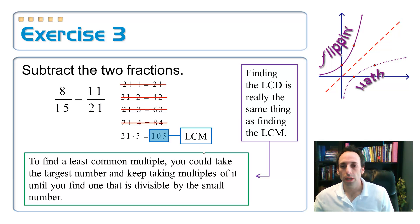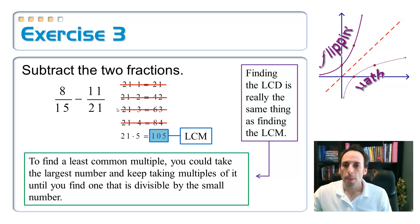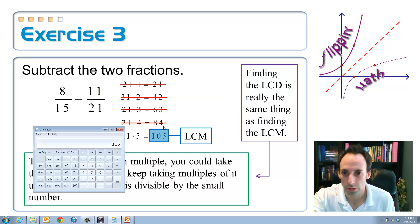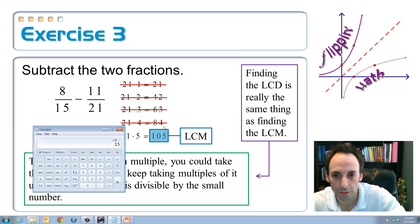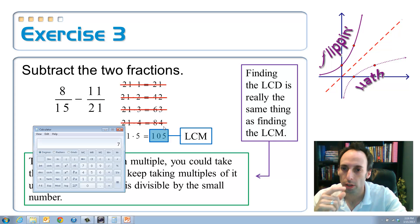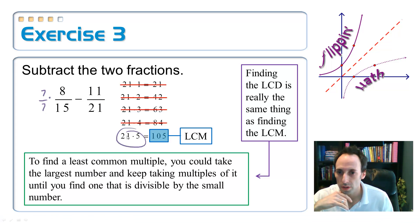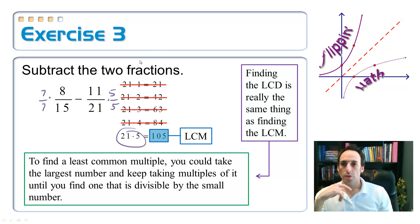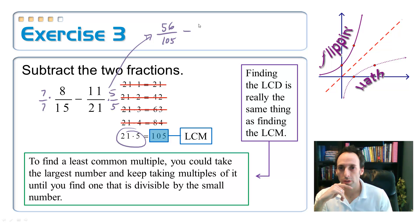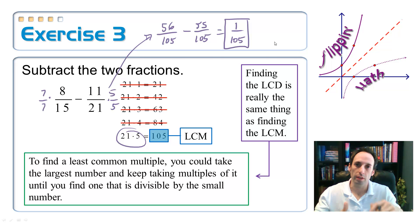So let's redo this problem using the least common multiple instead of that 315 we got before. What would I have to multiply 15 by to get 105? Divide 105 by 15 — it's seven. So I'm going to multiply the first fraction by 7 over 7, and I can see I'm going to multiply the second by 5 over 5. That gives me 56 over 105 minus 55 over 105, which gives me 1 over 105 — the same answer as before. So that's the second technique: finding the least common multiple.